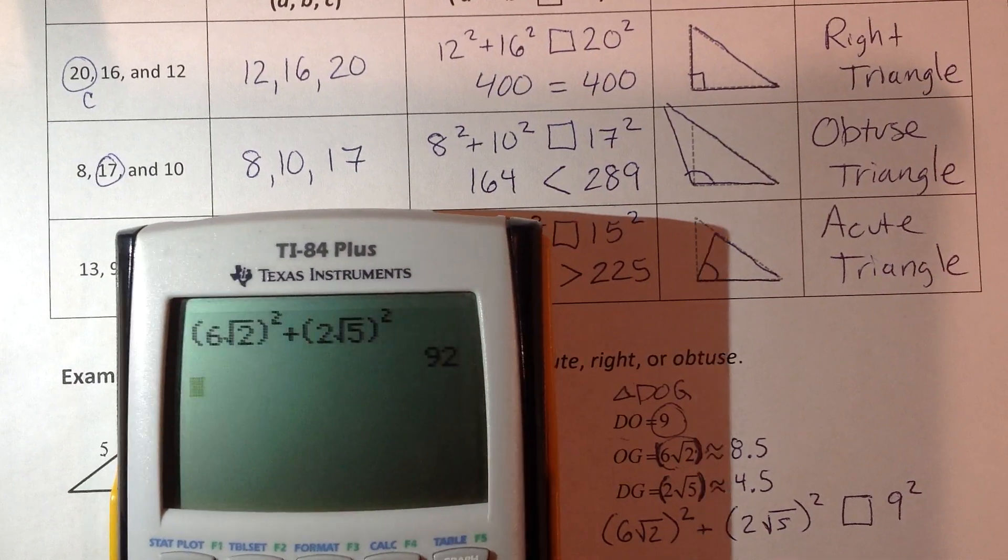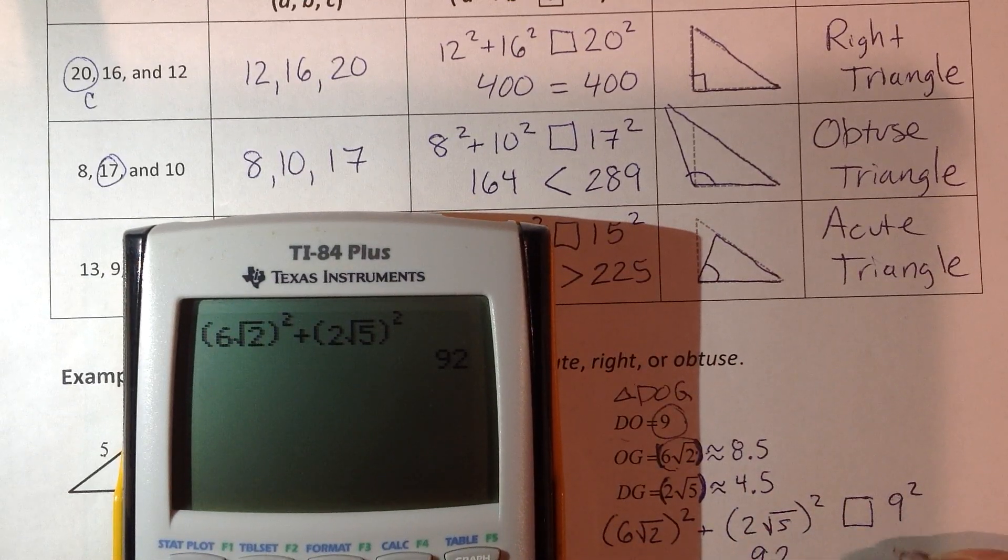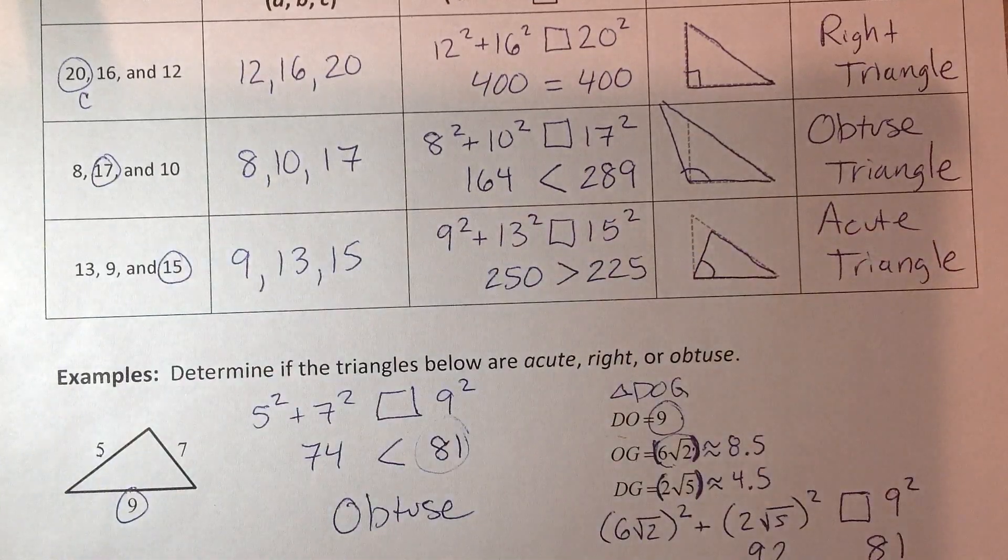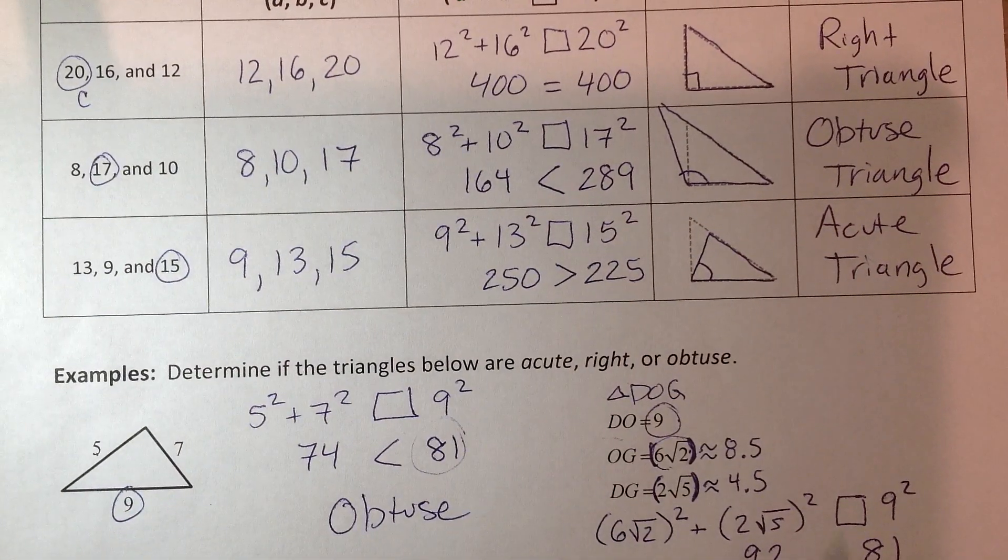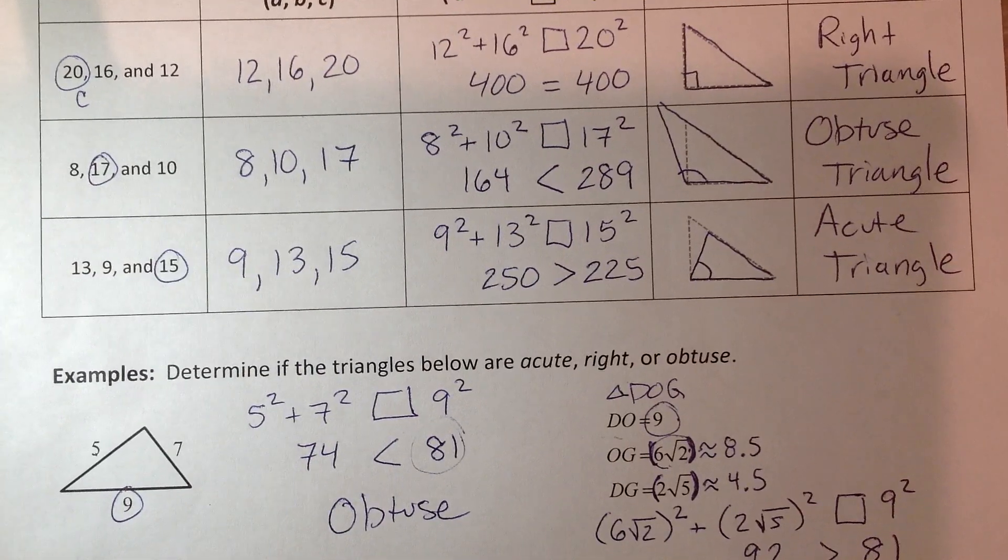So I can do that left side all at once. I got 92. And 8 squared is 81. So now I'm ready to look at this and make my decision. What happened to my C? This time, it's now smaller.